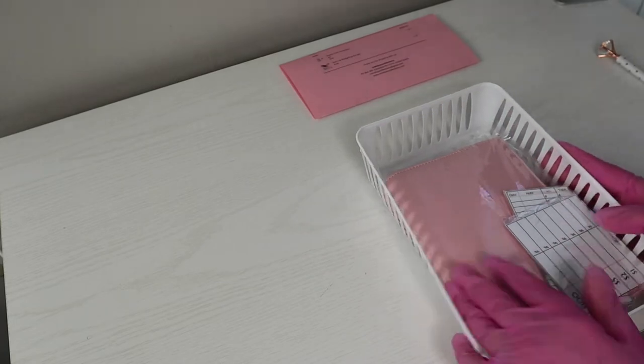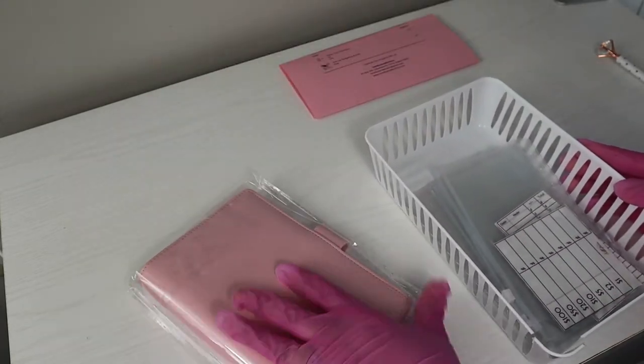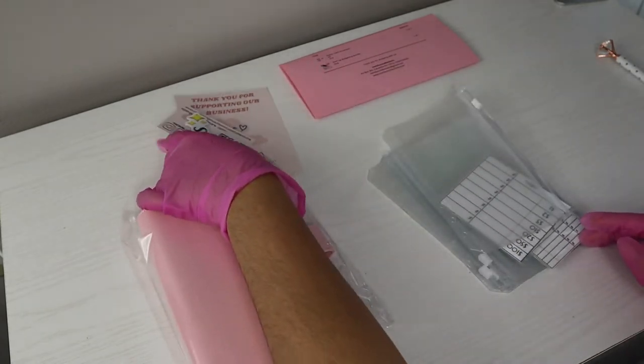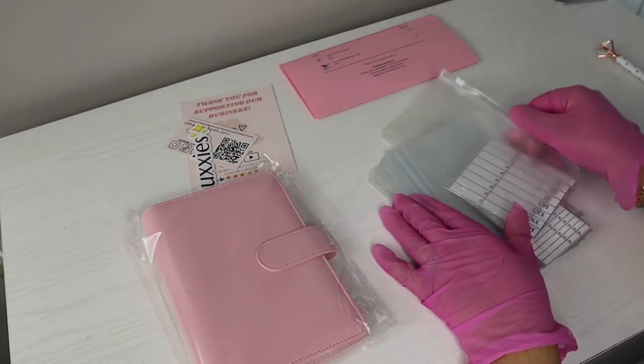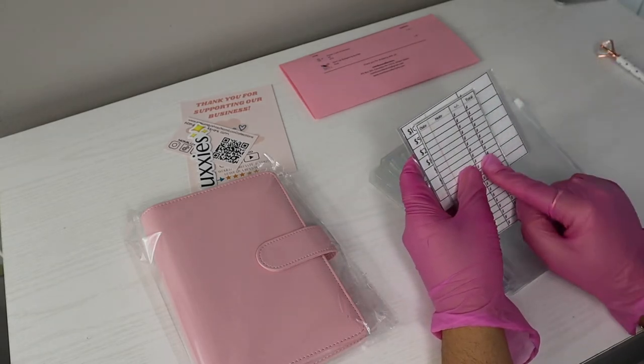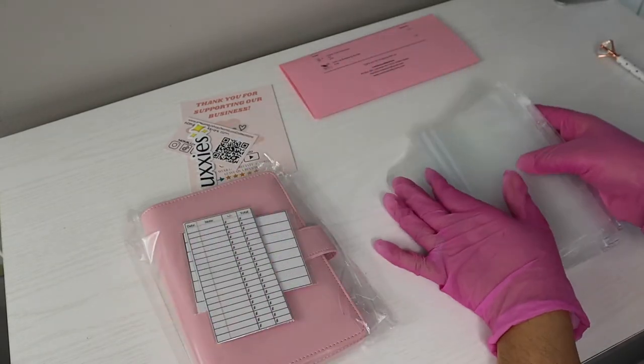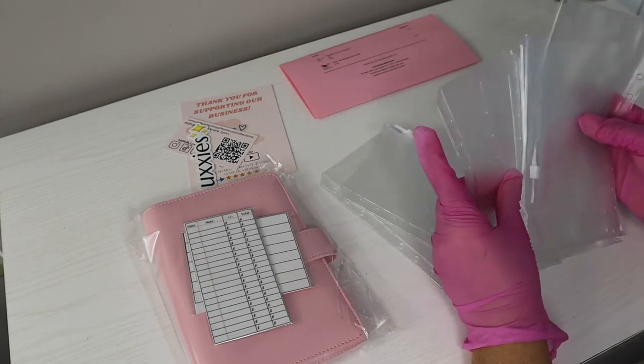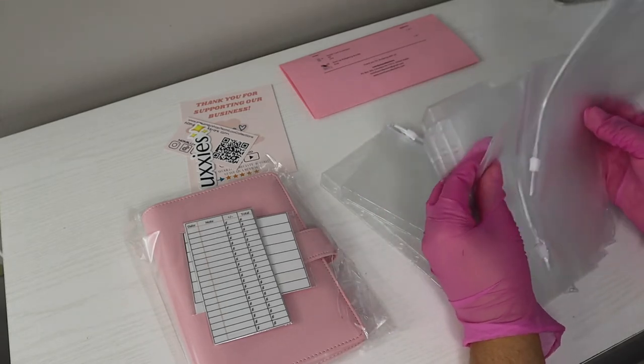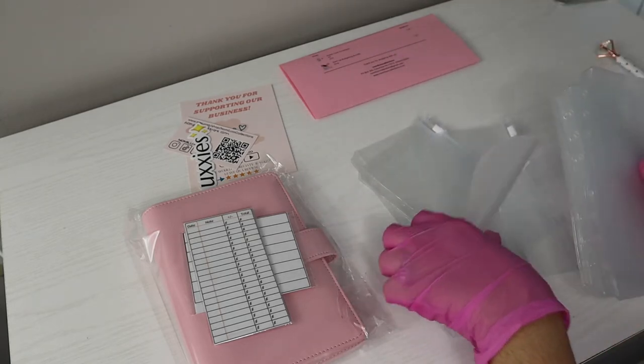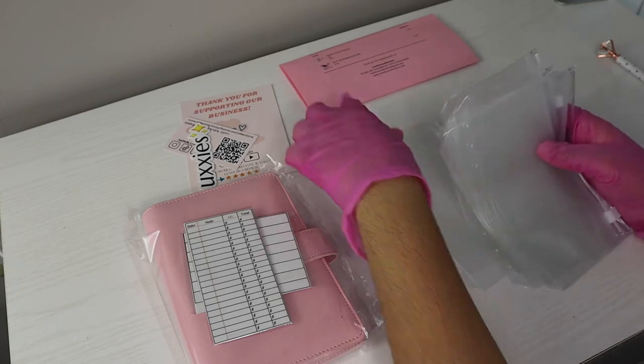Next order is for Angie. Angie got the startup budgeting bundle in pink, so the binder, the bank teller slip, the fund tracker, and then four envelopes for the startup budgeting bundle and seven separate. Now you already know the deal, I'm going to go ahead and remove all the holes and I'll be back.